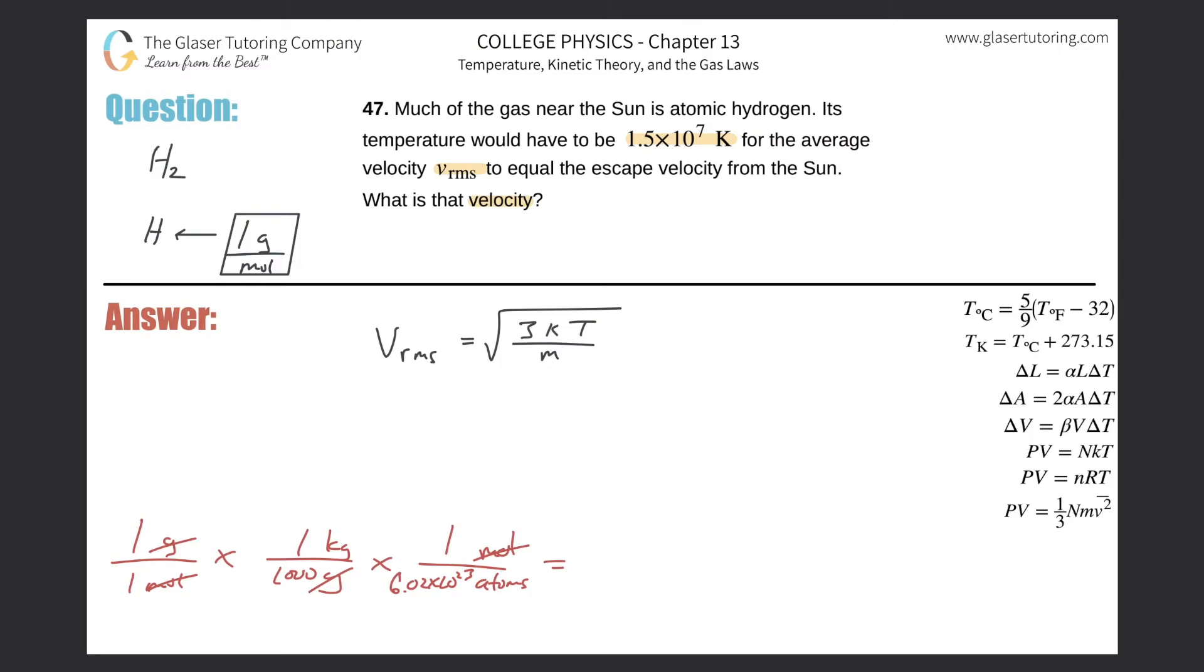Let's calculate. This is just one divided by, in parenthesis, 1000 times 6.02 times 10 to the 23rd. We get 1.66 times 10 to the minus 27, and this will be in kilogram per atom.